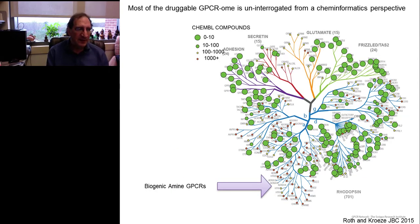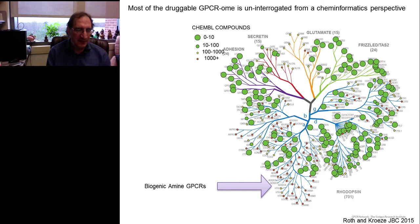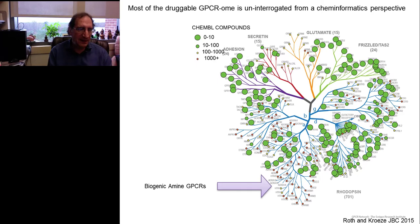Looking at it a third way, on a phylogenetic tree of the GPCR-ome, I tabulated the number of small molecules annotated in the chemistry literature against various members of the GPCR superfamily. Wherever there's a large circle, few if any small molecules have been annotated against that GPCR; a small circle means hundreds or thousands have been annotated. Receptors like the biogenic amine receptors have thousands of small molecules targeted against them, but most GPCRs in the genome have very few if any — a huge area potentially very valuable for therapeutic drug discovery.